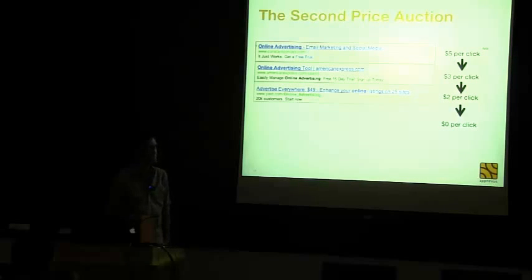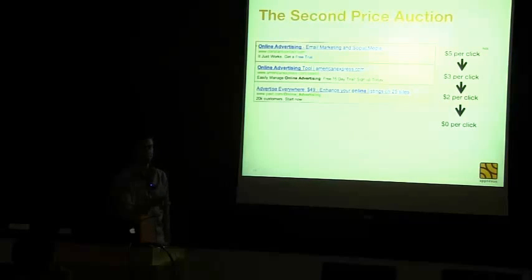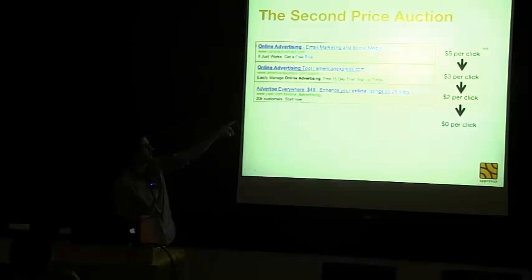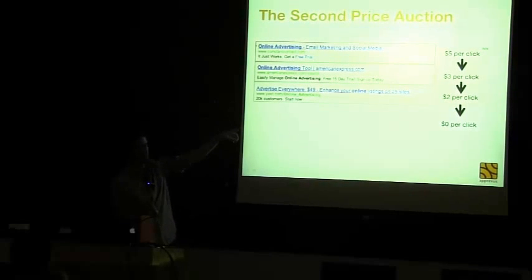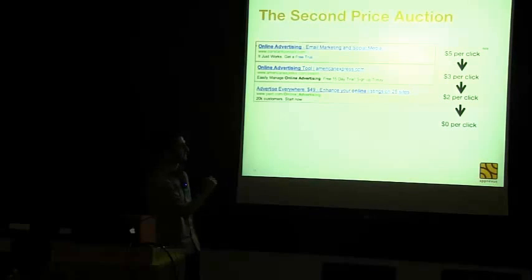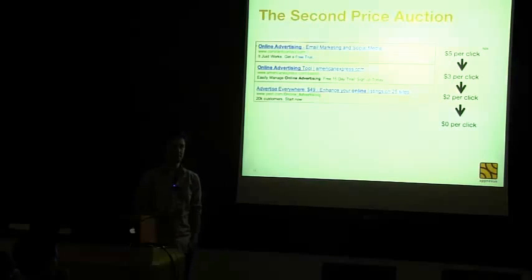The first innovation was implementing the auction as a generalized second-price auction. Whoever bids the highest actually pays what the second highest bidder bid. So if the top bidder bids $5 per click and the second highest bids $3 per click, the top bidder wins the top spot but only pays $3. This incentivizes advertisers to bid their fair value — whether they bid $4 or $5, they still pay $3, so they might as well bid their true value.